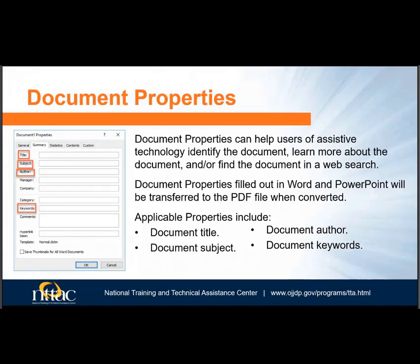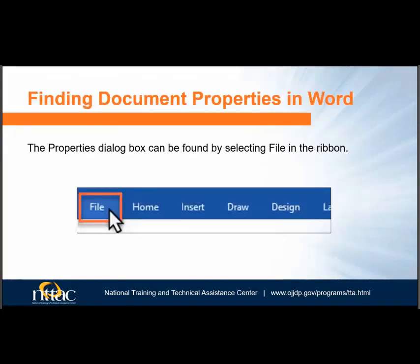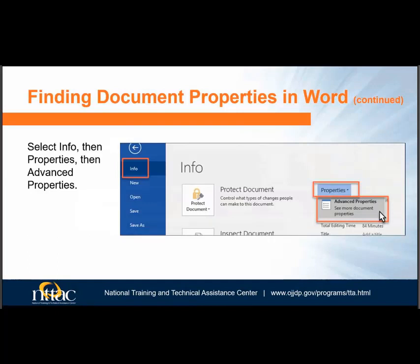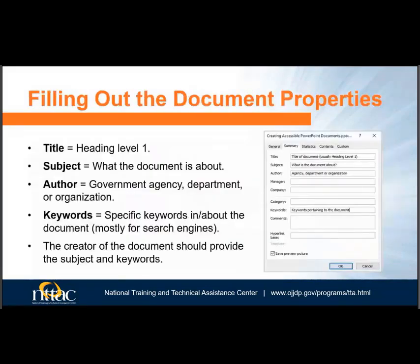This can be filled out in the PDF file, but it is a good idea to get a start in the source file. Select File on the ribbon — the Info view will appear. On the Info tab, select Properties, then Advanced Properties. A dialog box will appear. The title should match the Heading Level 1 of your document. The subject should briefly describe what the document is about. The author of the document should not be a person's name, but the organization or government department or agency the document is for — for instance, DOJ or OJJDP, not John Doe. The keywords are words that someone might use in searching for information your document might provide.